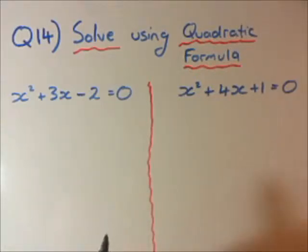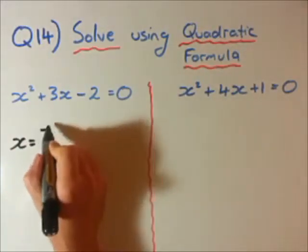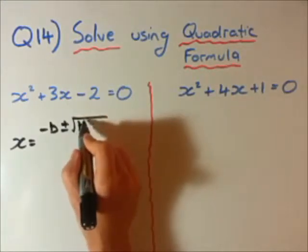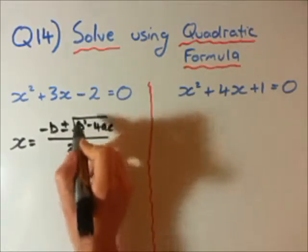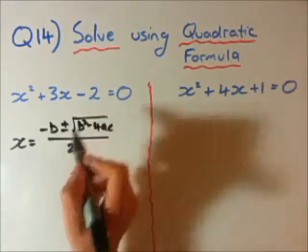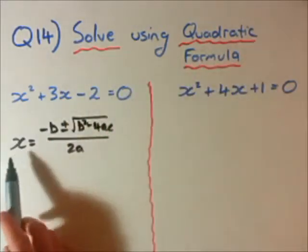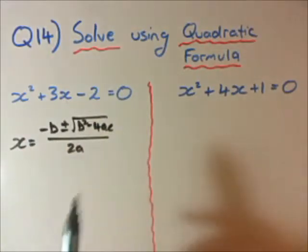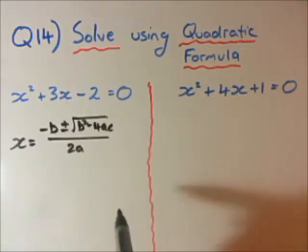It relies on you knowing the formula, which looks a bit scary, but write it out a few times and you'll get it. x equals minus b plus or minus the square root of b squared minus 4ac, all over 2a. This is the quadratic formula. When solving, x could give no solutions, one solution, or two solutions — and we talk about that in the next question, question 15.